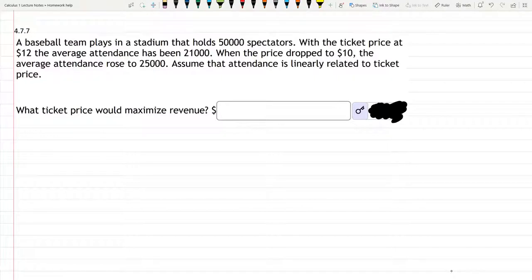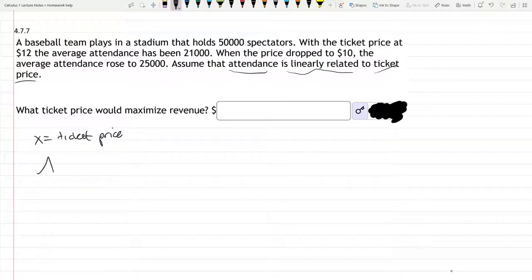We're given that there's a linear relationship between ticket price and attendance. We can choose ticket price, and I'm going to use X for the ticket price. That means our A(X) is going to be the attendance at price X.